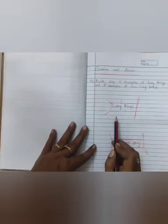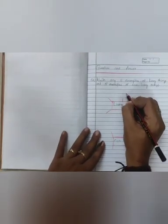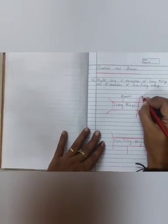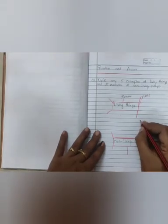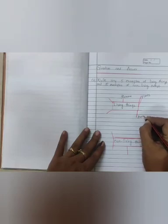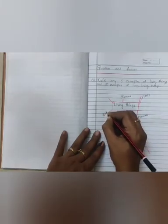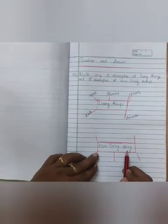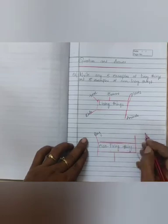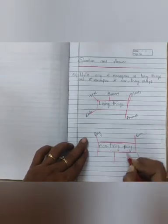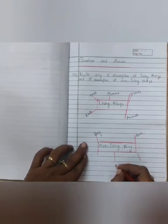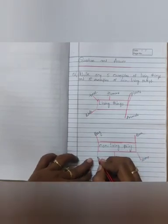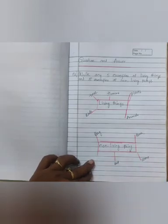See here. Living things: first, humans - H-U-M-A-N-S. Then plants - P-L-A-N-T-S. Animals - A-N-I-M-A-L-S. Birds. Trees. Now non-living things: first, bag. Book - B-O-O-K. Bed - B-E-D. Stone. Box.